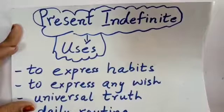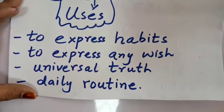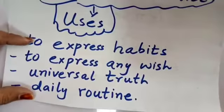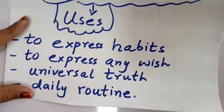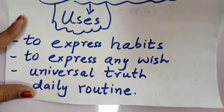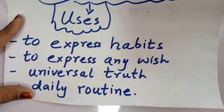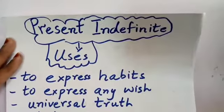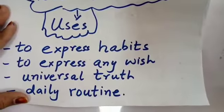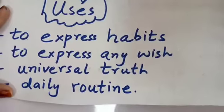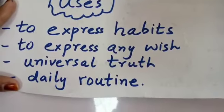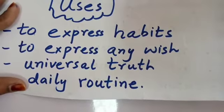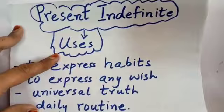The fourth use is for describing any daily routine — jo aapka roz ka kaam ho. For example: 'I reach school on time' — mein rozana school time par pahunchti hun. If you clean daily, that is your daily routine, and for that you use present indefinite tense.